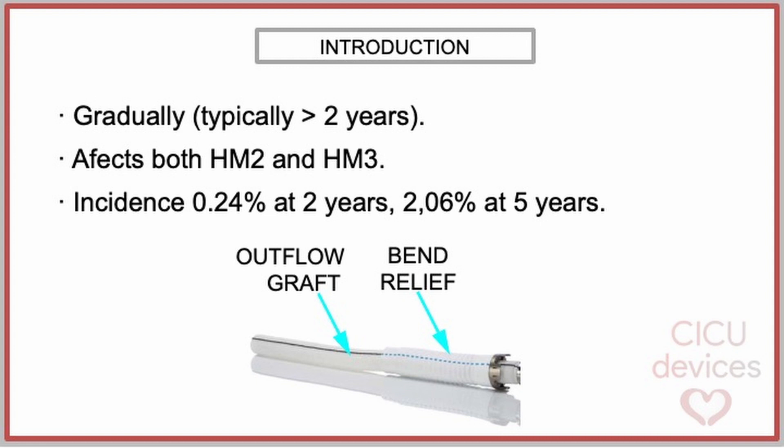The Kaplan-Meier estimate for the incidence rate of extrinsic obstruction post-implantation is 0.24% at 2 years and 2.06% at 5 years.